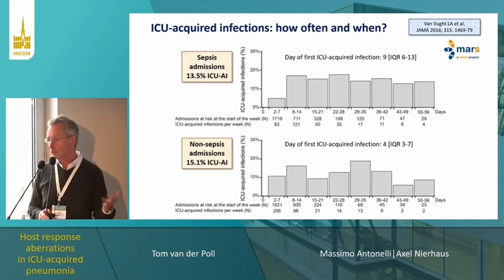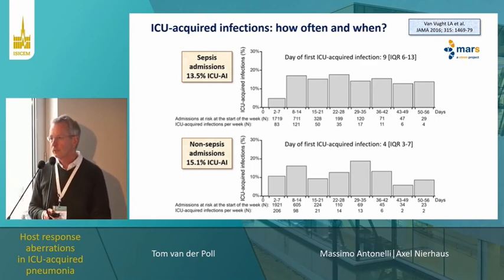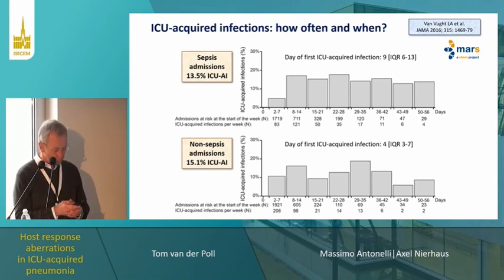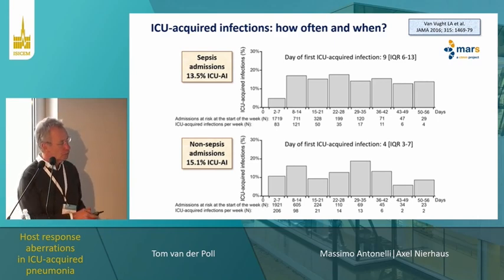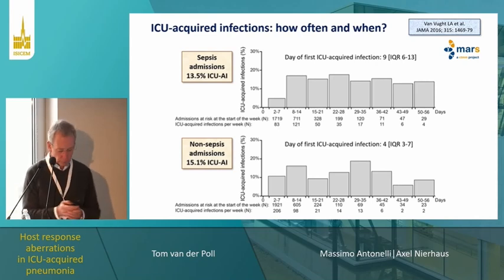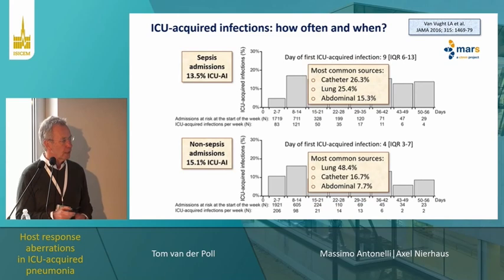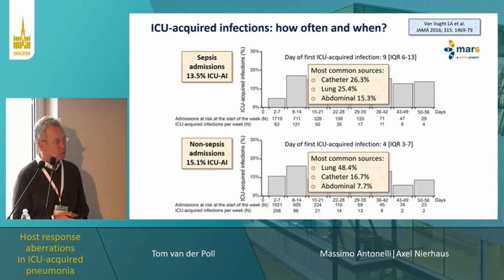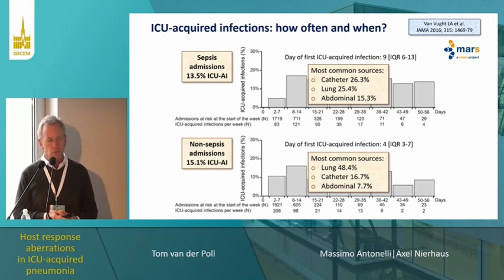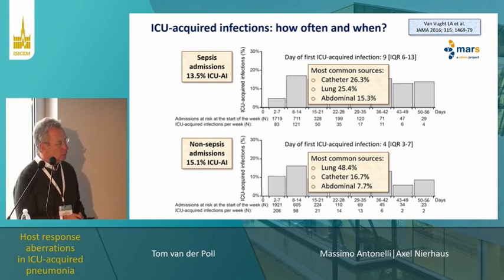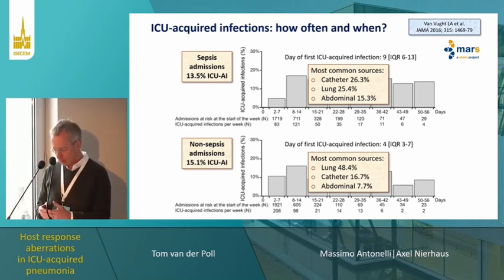Looking at the source of infection in these patients, the lung is the most prominent cause of ICU-acquired infections — particularly true for non-sepsis admissions but also for sepsis admissions. Shifting to the host response: this diagrammatic representation shows what we currently believe is the host response to sepsis and critical illness in general. At the top are pro-inflammatory responses relating to leukocyte activation, endothelial cell activation, coagulation activation, complement activation, and platelet activation. Below in green are anti-inflammatory responses resulting in immune suppression, mainly from T and B cell apoptosis and reprogramming of antigen-presenting cells.